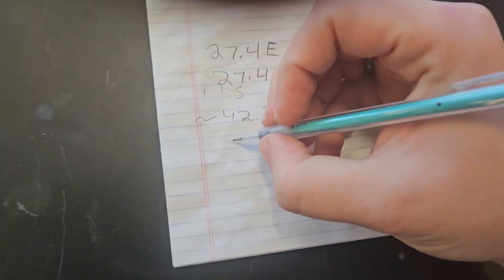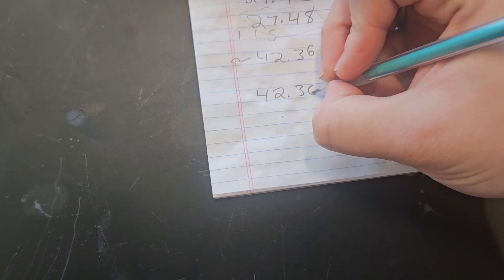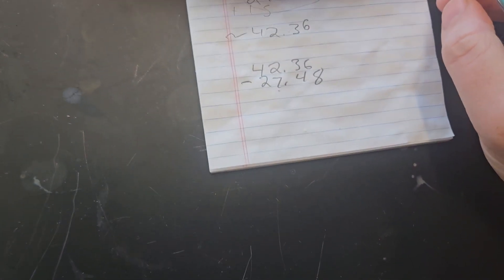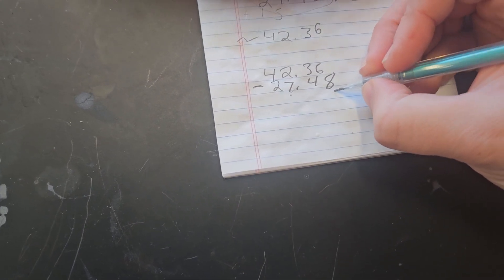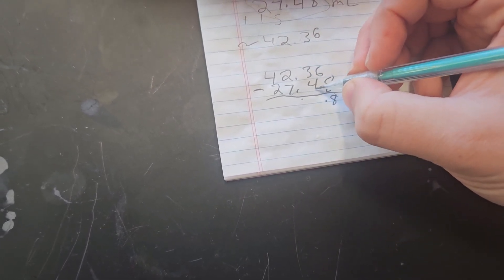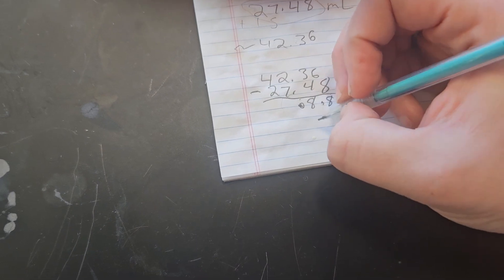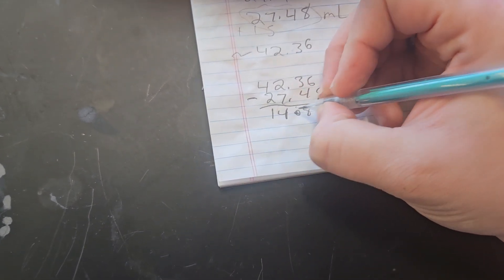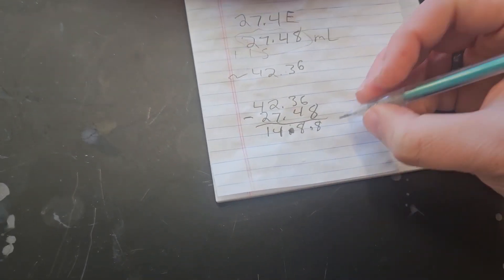To find out the volume delivered, we're going to do 42.36 minus my 27.48, and you can use a calculator to do this. You do not have to do it by hand. So the difference is 14.88 mils. I delivered 14.88 mils.